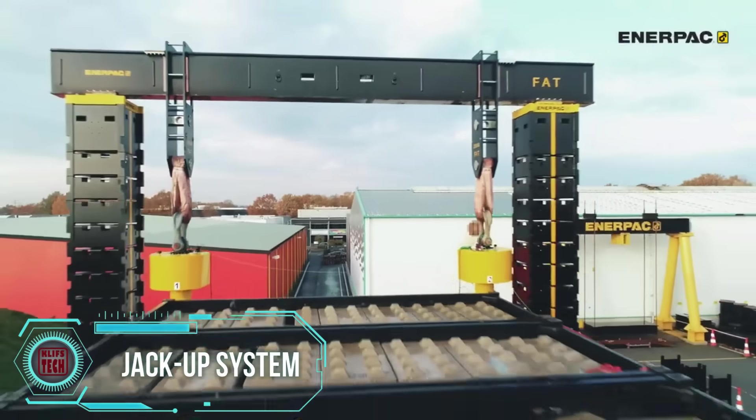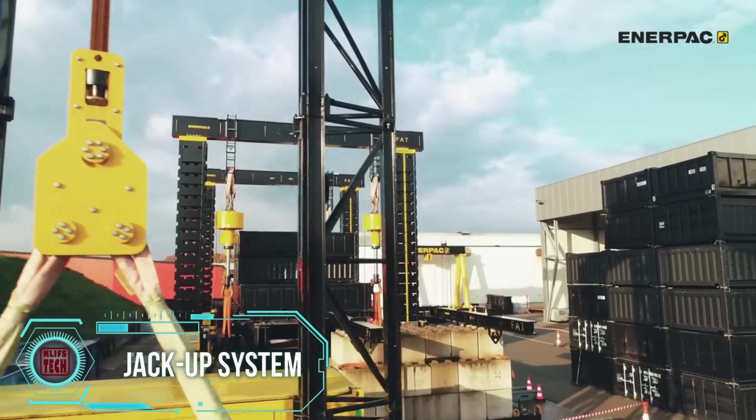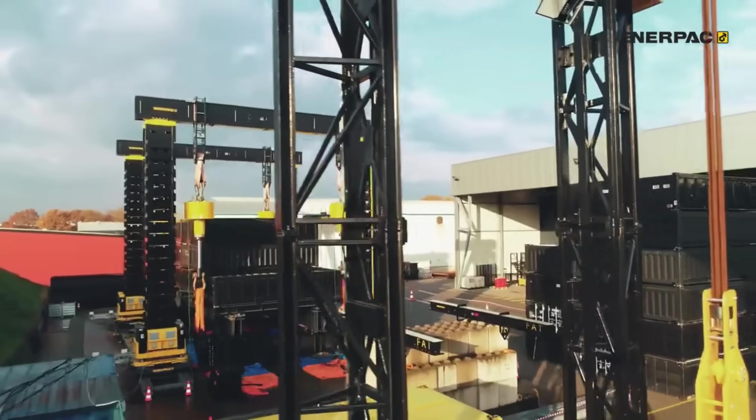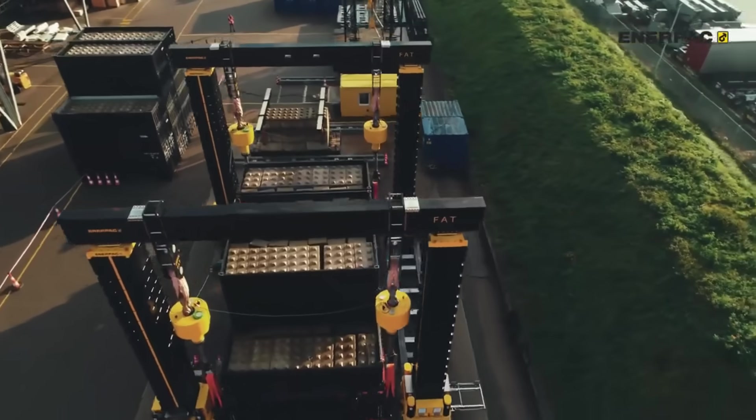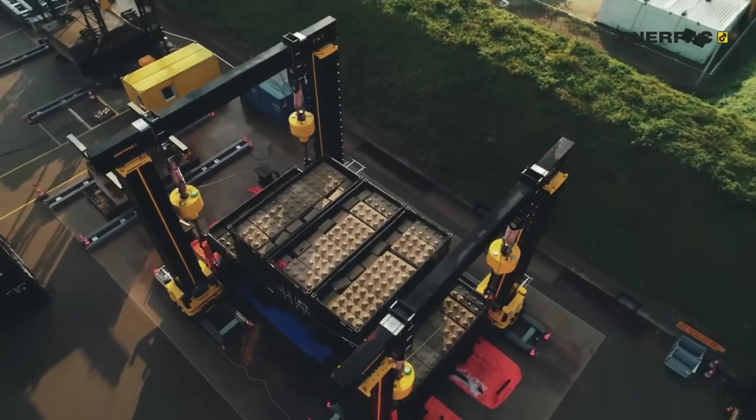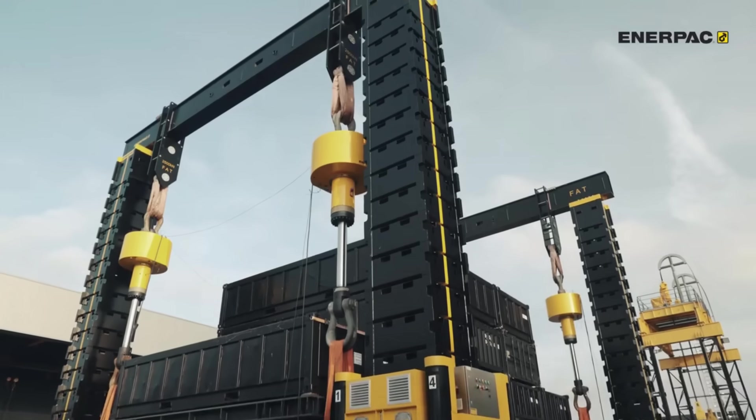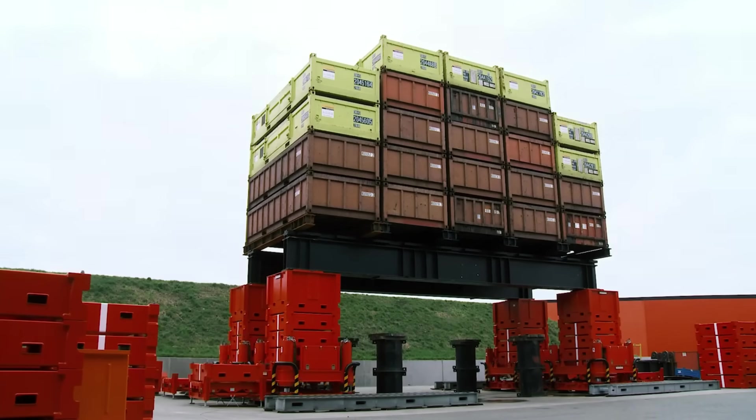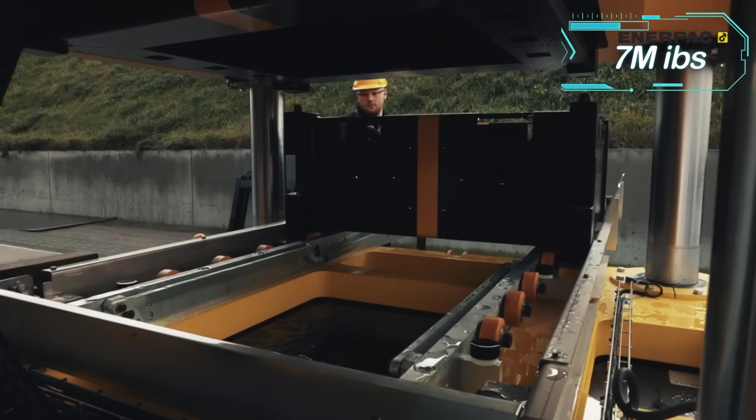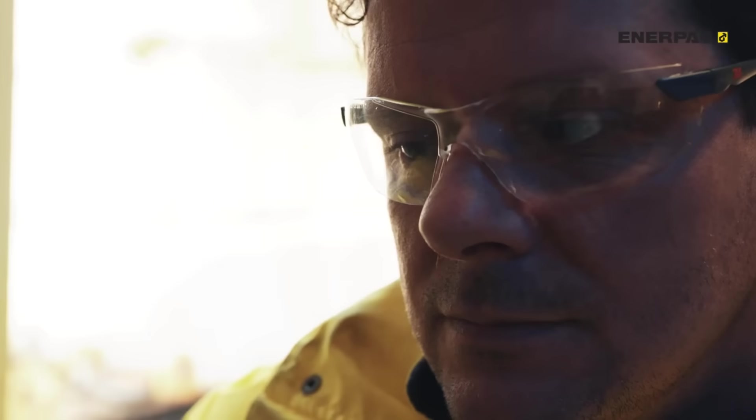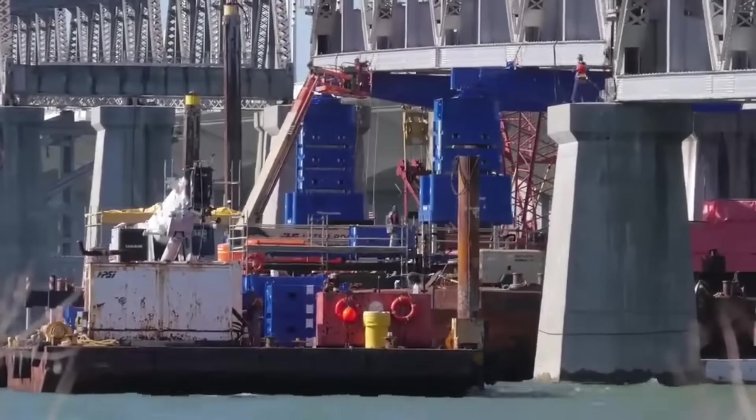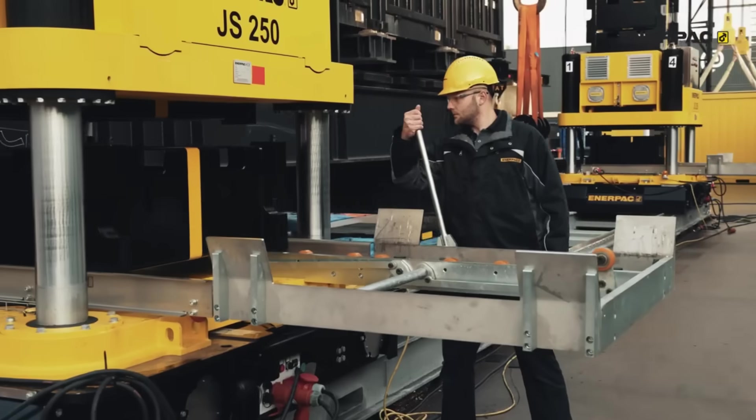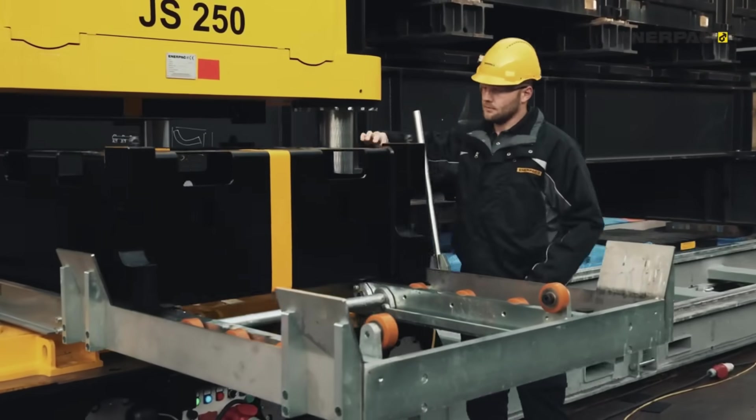Imagine a construction scenario where a traffic interchange needs a revamp. Interhydraulic blocks, the unsung heroes, get the job done efficiently. Take for instance the JS750 unit, capable of hoisting a staggering 750 tons with a swift lifting speed of up to 6 miles per hour. In a typical setup, four of these units work in harmony, collectively lifting an impressive 3,000 tons. Guided by a computer system, these units seamlessly collaborate and can even operate in automatic mode. What's more, they're versatile enough to be placed on a self-propelled modular transporter, offering flexibility in transportation and making them indispensable when it comes to handling heavy-duty construction tasks.